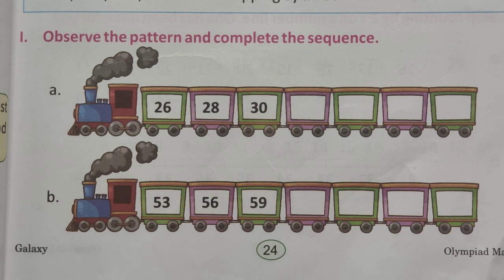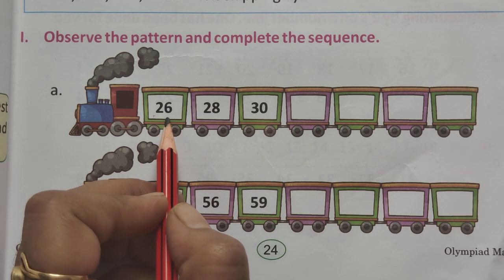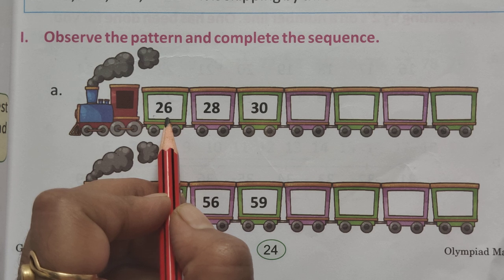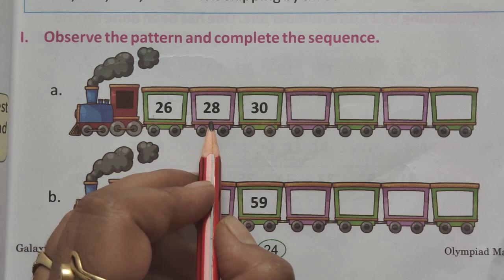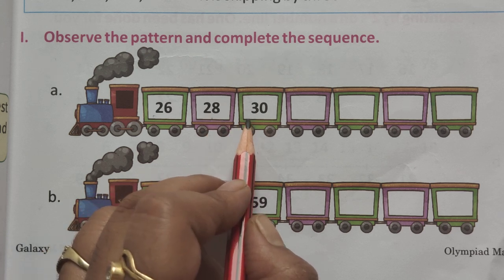So, humayen isse sequence mein aage ki taraf bhaana hai. It means, dekhe, ab kitna skip kiya hoi hai isnei? 26, count the number, 27, and 28. Two number skips, na? So, 28, then after two skips that, 29, then 30.